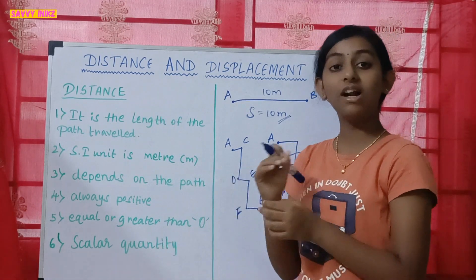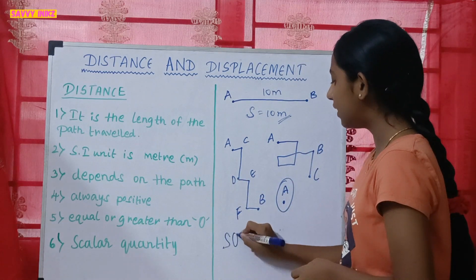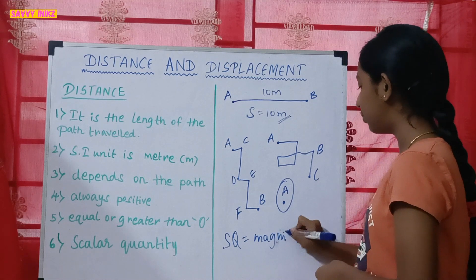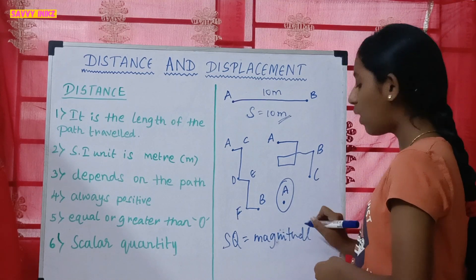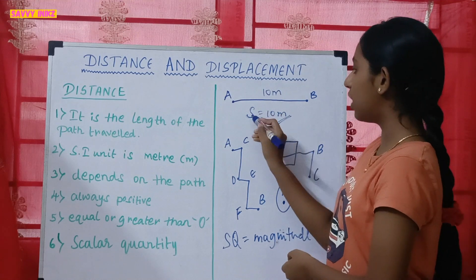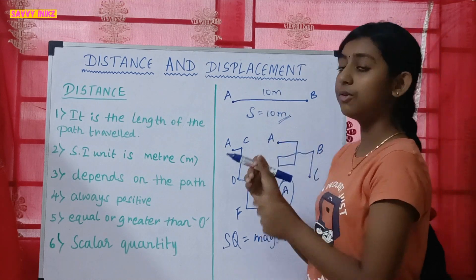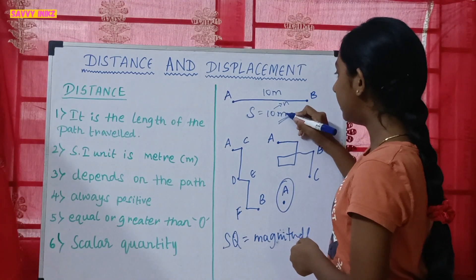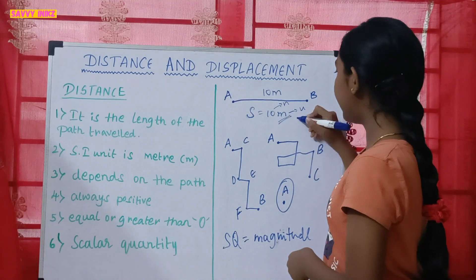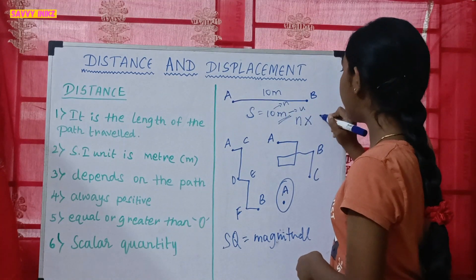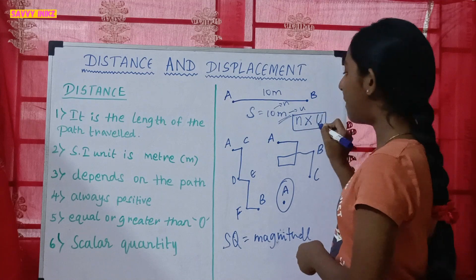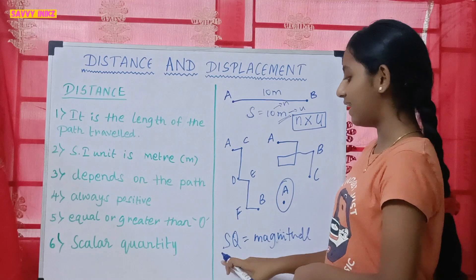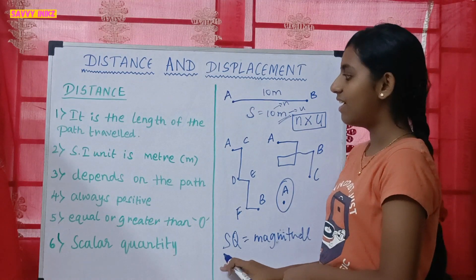Distance is a scalar quantity. A scalar quantity is simply defined as a quantity that has only magnitude. Magnitude is the numerical value multiplied by the unit — for example, in '10 meters,' 10 is the numerical value and meter is the unit. Since distance only has magnitude and no direction, it is a scalar quantity.